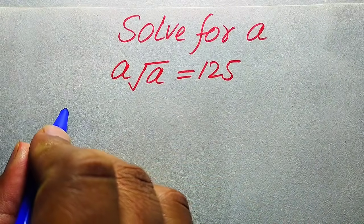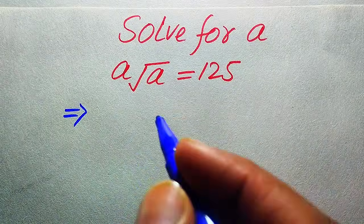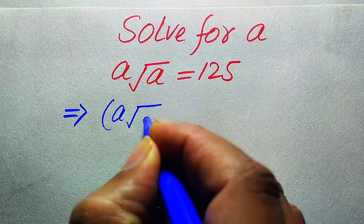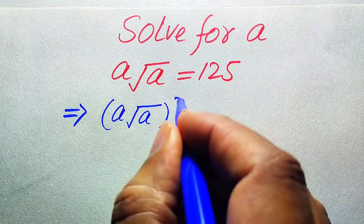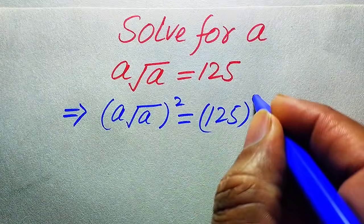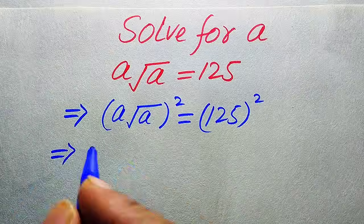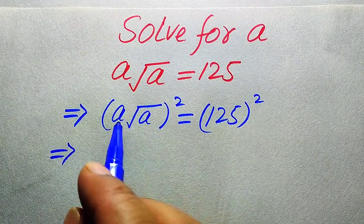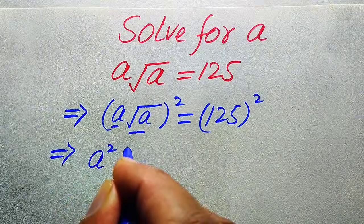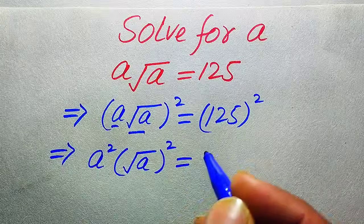First we need to remove the square root sign from the left hand side. To do this we take squaring on both sides, so it will be written as (a times √a) whole squared equals 125 whole squared. On the left hand side we apply the square separately on both values, giving us a² times (√a)² equals 125 whole squared.